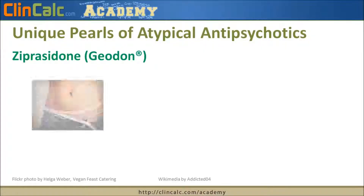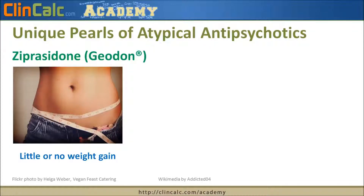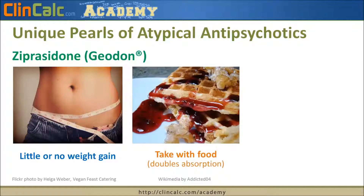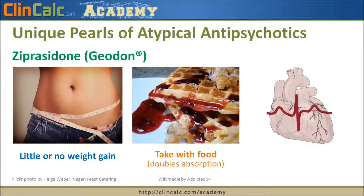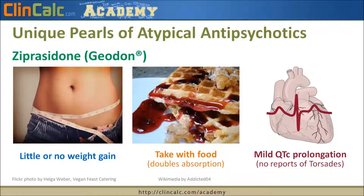Ziprasidone or Geodon has a few unique characteristics. Unlike some other atypicals, there is very little or no weight gain, compared to the significant weight gain seen with olanzapine. Ziprasidone should be taken with food, as it doubles the absorption when taken with food. There is also a warning regarding mild QT prolongation — the QT interval spans from the beginning of the QRS complex to the end of the T wave on an EKG strip — and if it expands too much, there is risk for arrhythmias, specifically torsades. There are no case reports of torsades with ziprasidone, but it can increase the QT interval by about 10 milliseconds, which is noted in the product labeling.